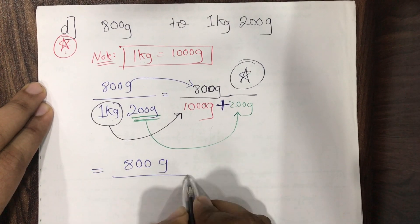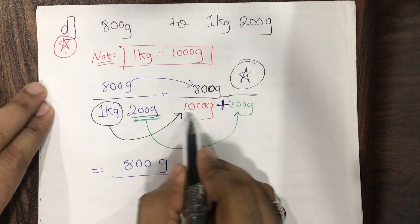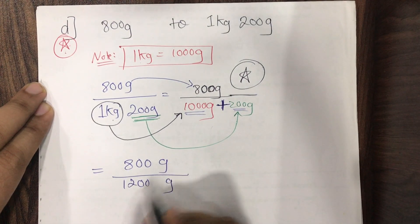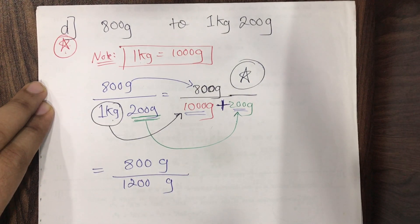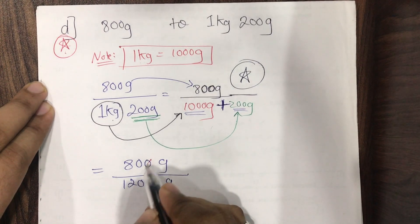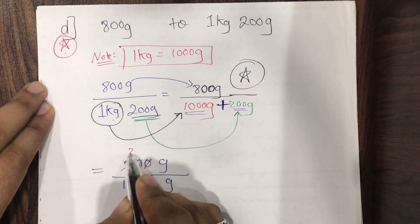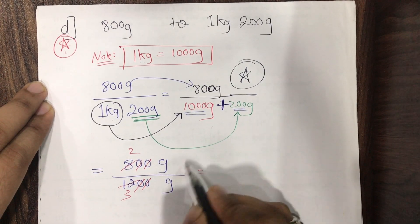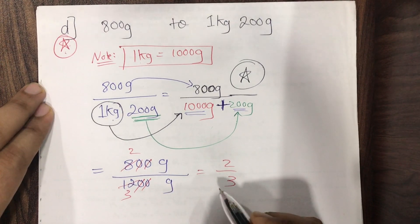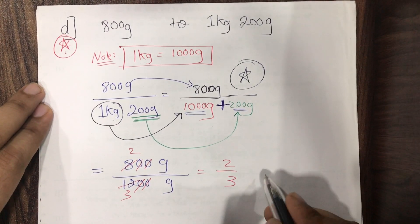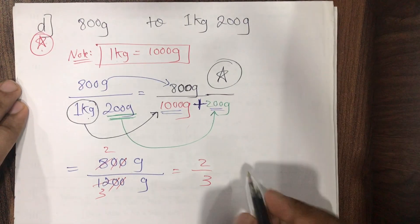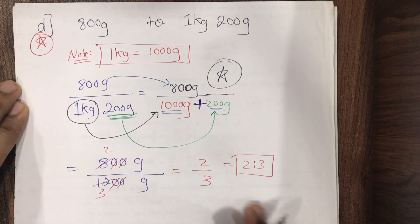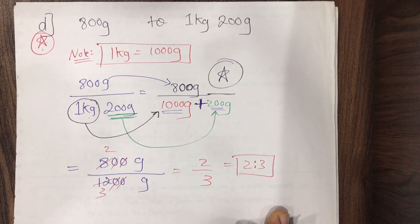So we have 800 grams upon 1200 grams. Grams cancel. Doing the cancellation: dividing numerator and denominator by 400 gives us 2 upon 3. Ratios have no units. So the answer is 2:3. Please pause the video and do it yourself.